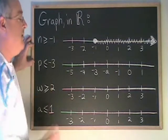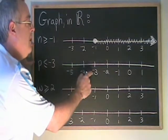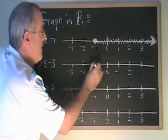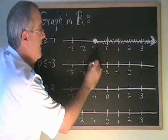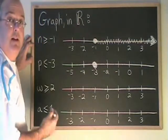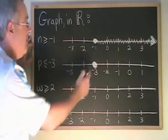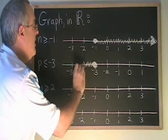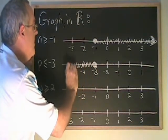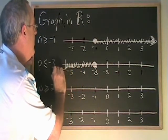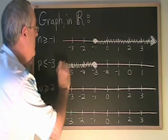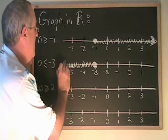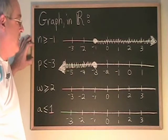P less than or equal to negative 3. Negative 3 is equal to negative 3, so it's part of the answer — I put a dot. All of the numbers less than negative 3 are over here, so using shading, I show that they are part of the answer. And I put an arrow showing that it goes on and on forever in the negative direction.